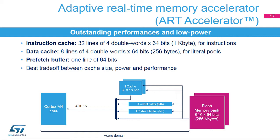The ART accelerator brings outstanding performance and reduces dynamic power consumption. It consists of a 1-kilobyte instruction cache, 256 bytes of data cache, and a prefetch buffer. The instruction cache contains 32 lines of 4 double words, and the data cache has 8 lines of 4 double words. Once all instruction cache memory lines have been filled, the LRU (least recently used) policy determines the line to replace. This is particularly useful when code contains loops. After each miss, the cache is updated with only the requested double word to limit flash access for power saving.